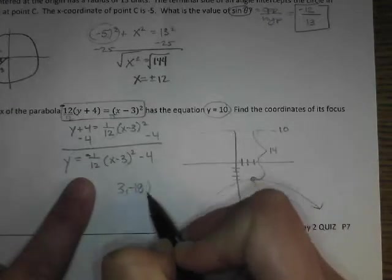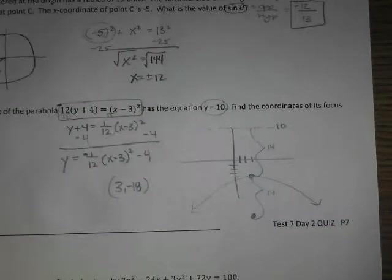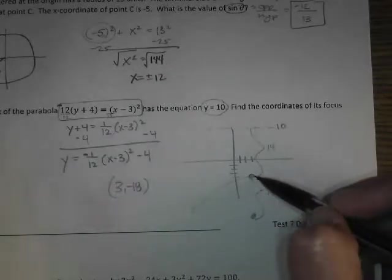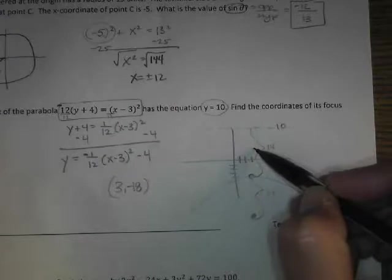Do you follow? And so my focus needs to be 14 units further below that. So it's still going to be at 3, but this was negative 4, and I have to go 14 units more, so it's going to be 3, negative 18. Well, I didn't know that. So it would be 3, 3. That's what I got.